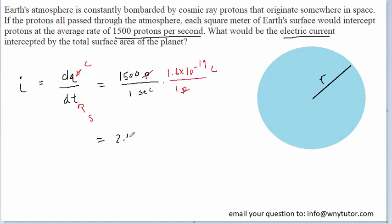We end up with a value of 2.4 times 10 to the negative 16th coulombs per second. Coulombs per second can be simplified to just an ampere, which is a capital A. But that would represent the electric current for each square meter of Earth's surface. So this would be amps per meter squared.